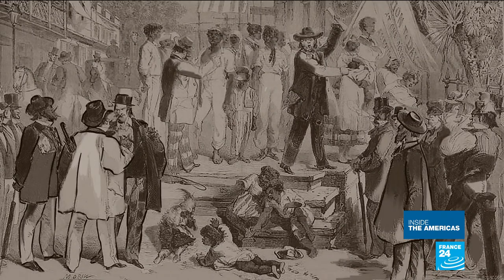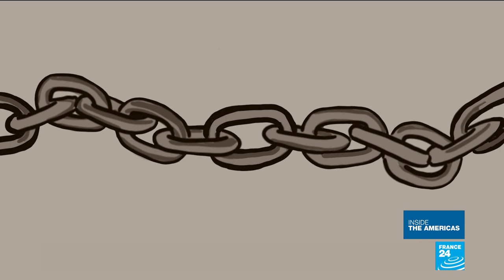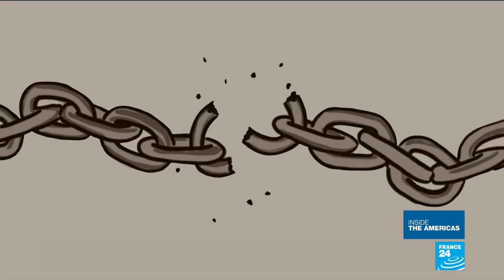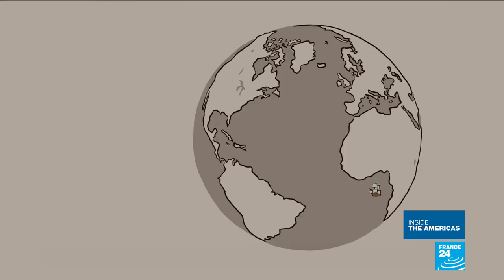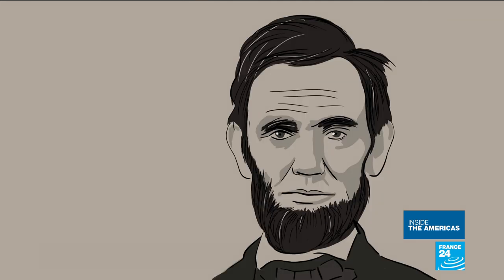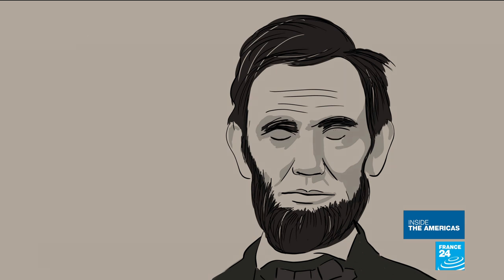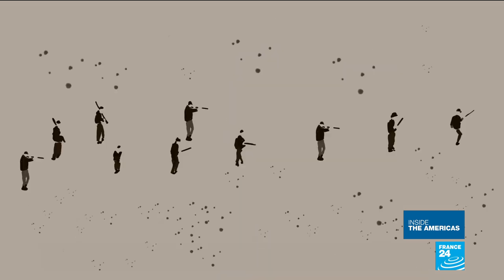Eight out of twelve of the first American presidents possessed slaves, even as the abolitionist movement was growing in the industrialized north, and international trafficking was banned in 1808. In 1860, the election of Abraham Lincoln poured fuel on the fire. The southern states seceded, and the Civil War began.